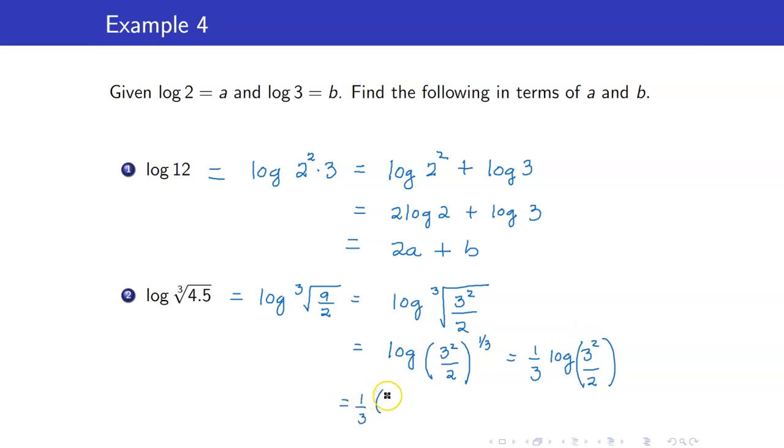So that's (1/3)log(3^2/2). And we are now ready to split that up. That is logarithm of your numerator 3^2 minus log of the denominator which is 2. So therefore, this is (2/3)log(3) - (1/3)log(2). In terms of a and b, this is (2/3)b - (1/3)a, or (2b - a)/3.